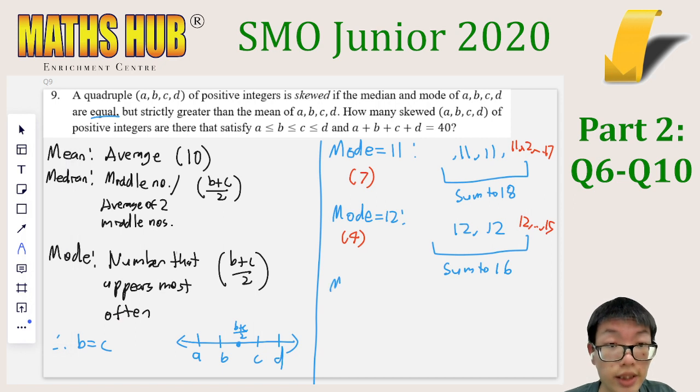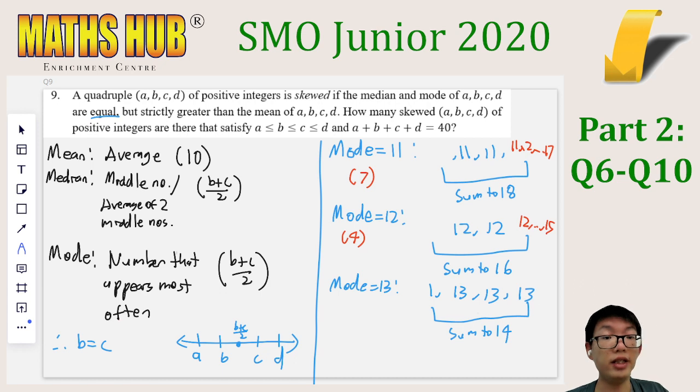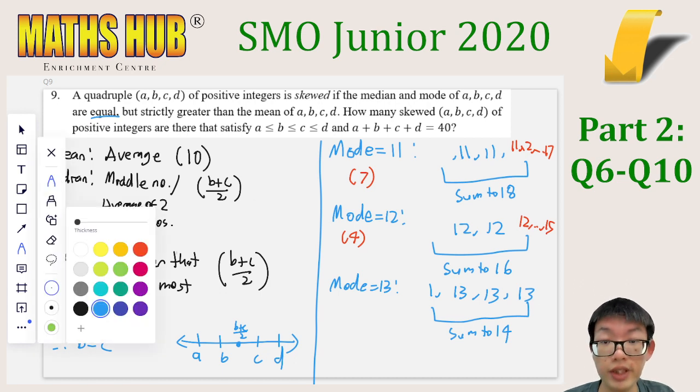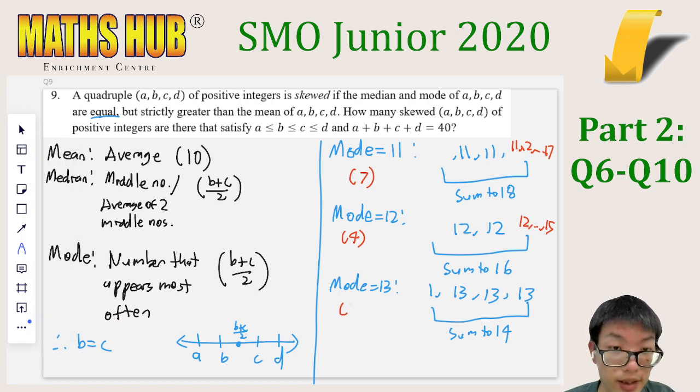Next case is the mode is equal to 13. If we have 13 and 13 means that the first and last number sum to 14. It is fairly clear that the only way we can do this is if the first number is 1 and the last number is 13. So there is only one case for the mode being 13, which is 1, 13, 13, 13. By this same argument, the mode cannot be 14 or larger because if we multiply that by 3, that already exceeds 40. And therefore, the number of quadruples is just 7 plus 4 plus 1, which is equal to 12.